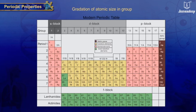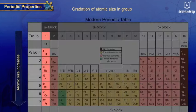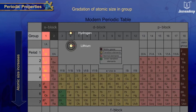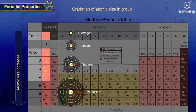Gradation of atomic size in a group: atomic size increases from top to bottom in a group, as new shells are added, taking electrons in the outermost shell farther from the nucleus.